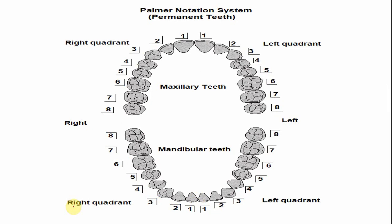The next numbering system is the Palmer notation system. In the Palmer notation system, the number of the mandibular canine for both the right and left sides is 3. The difference is indicated by a symbol — one symbol indicates the mandibular left arch and the other indicates the mandibular right arch.